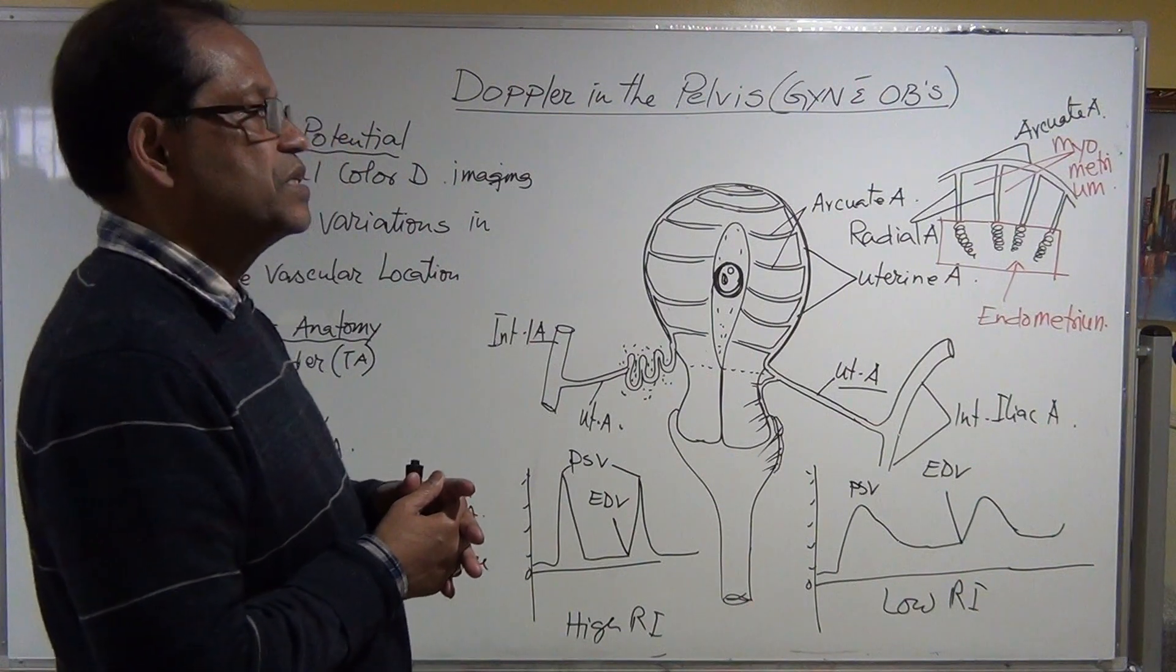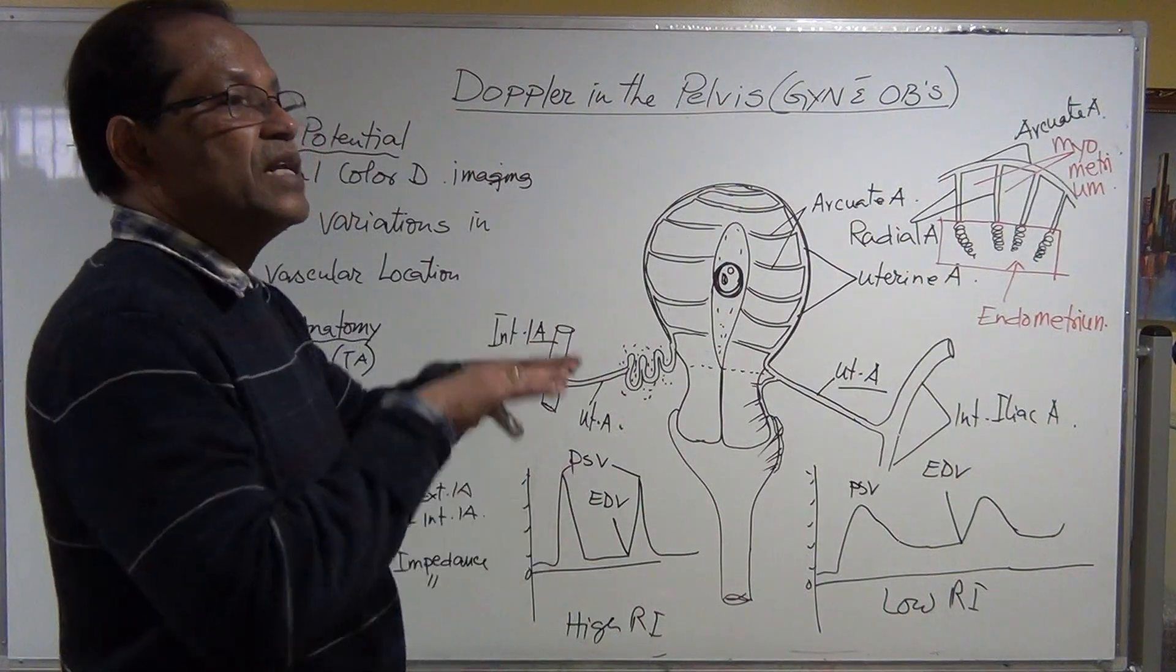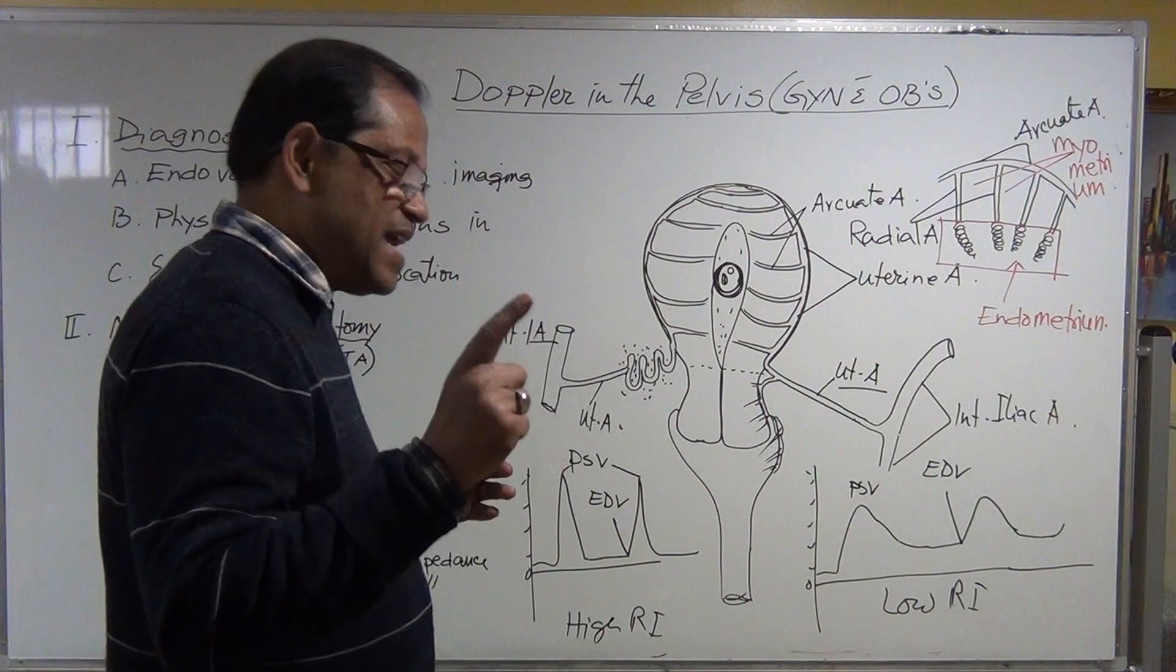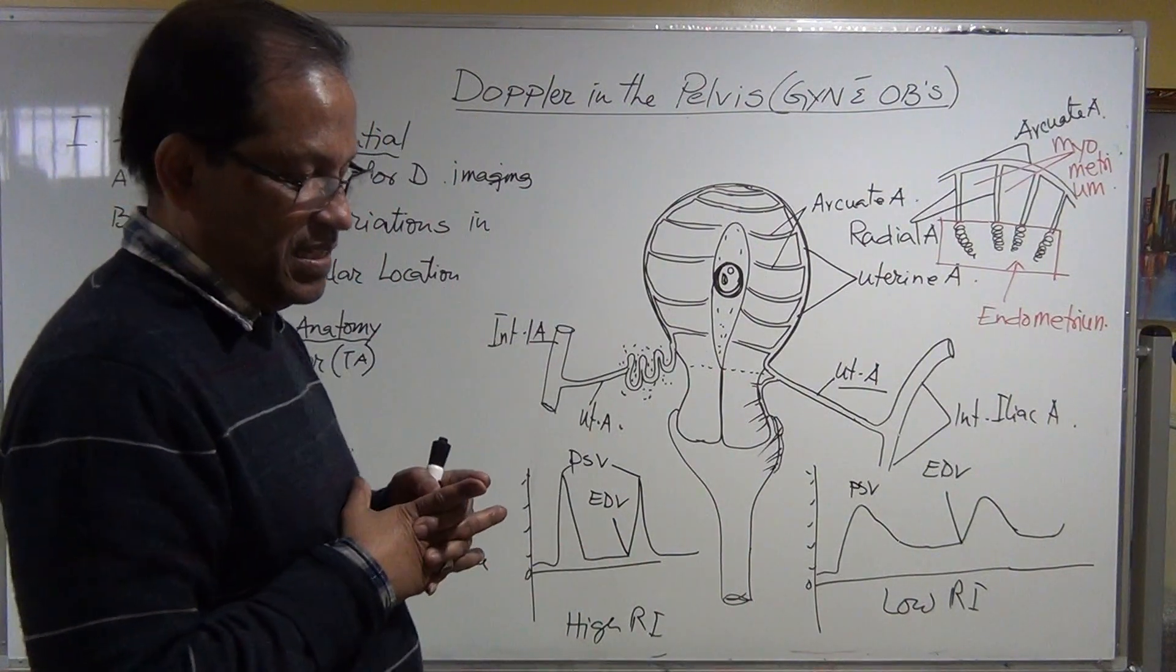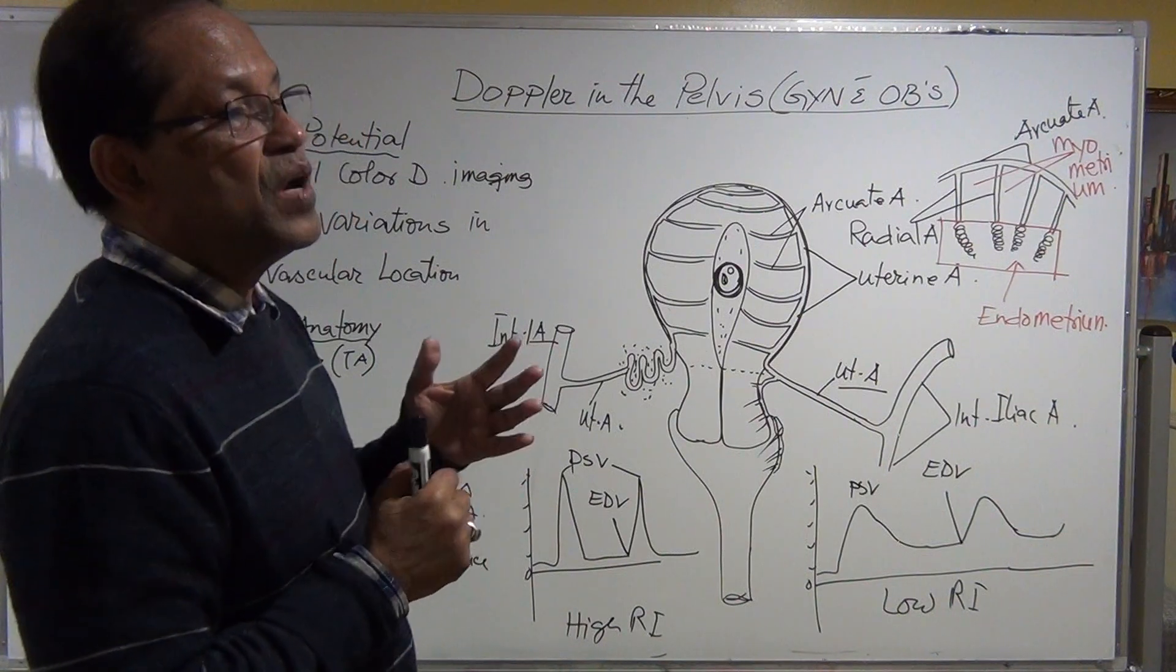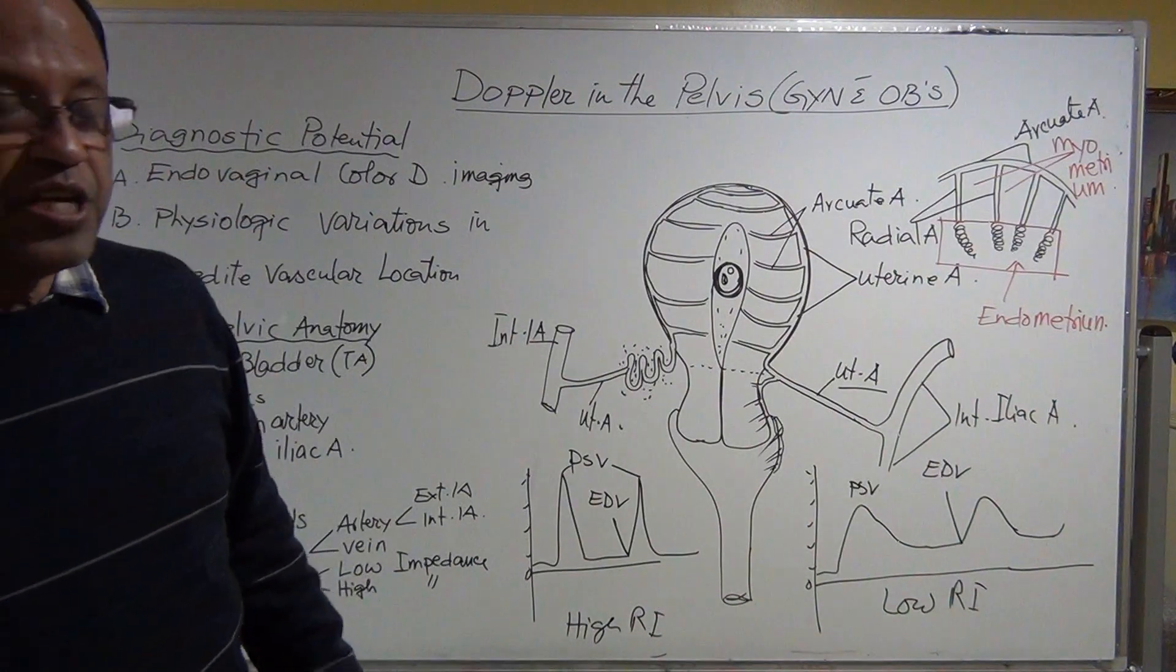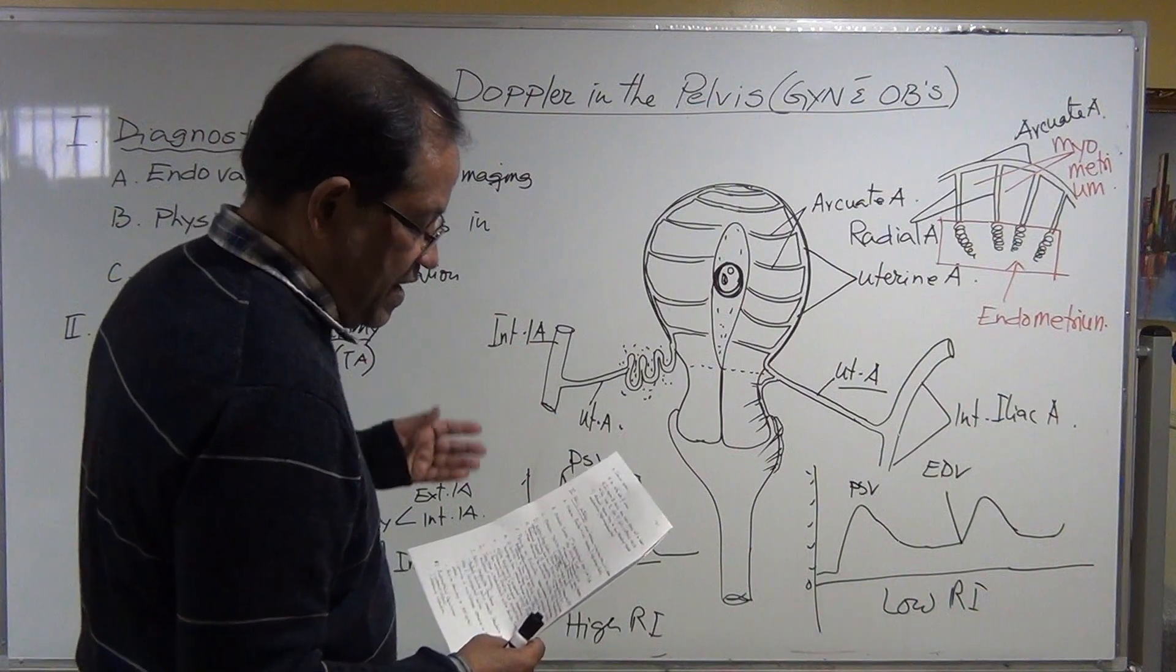To evaluate the functional status of the ovary, corpus luteum, endometrium, uterus, we need to do the Doppler to understand the physiological phases are normal. Again, if we see the patient might have some pathology related with blood vessels or blood supply, we need to evaluate all those blood vessels by the Doppler.